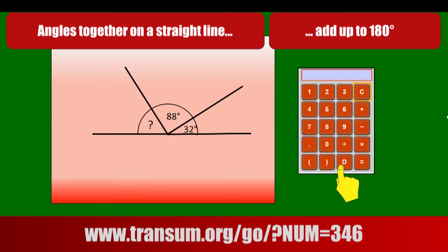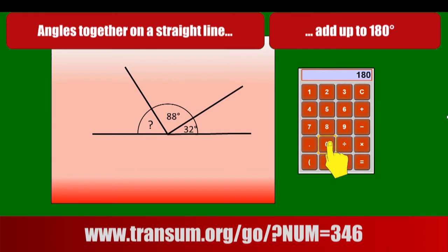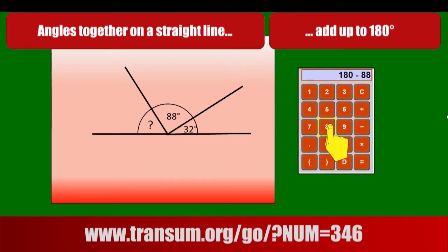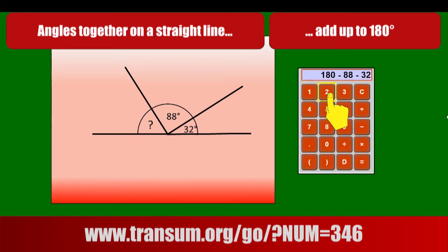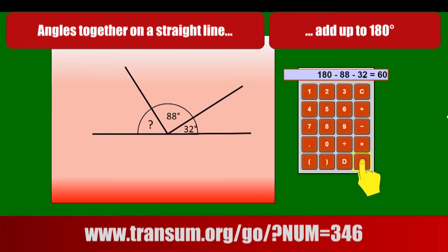Now we've got three angles together on a straight line. The most efficient way to do this on the calculator is to start with 180, subtract 88, and subtract 32, and we get the answer 60. I do believe the question mark angle is 60 degrees.